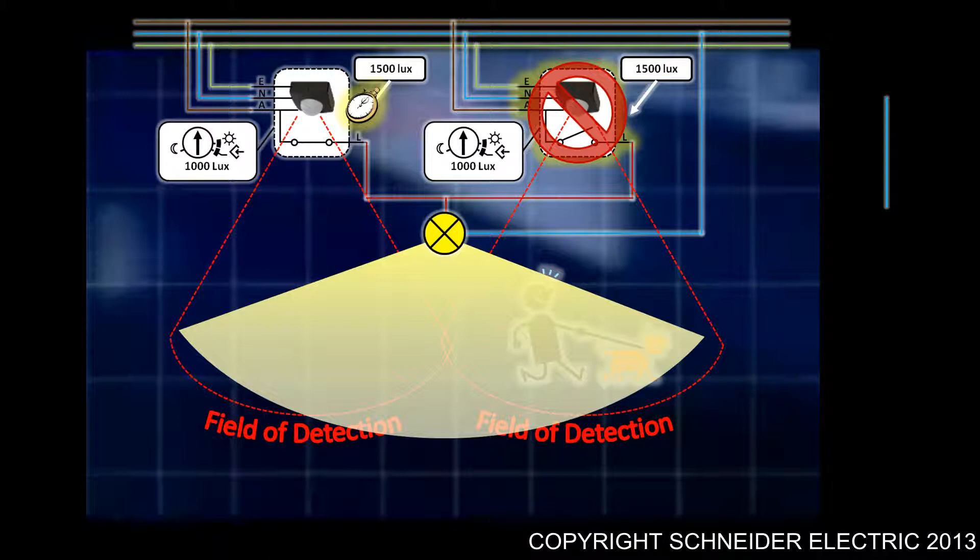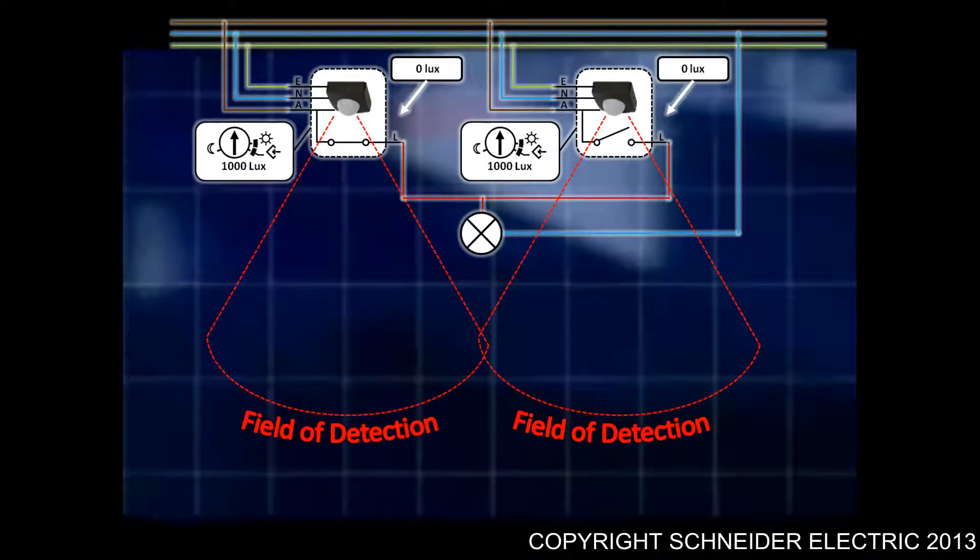That second sensor will start to operate as per normal when all the light has turned off and that sensor is measuring anything less than 1000 lux. Now if you want that sort of functionality, what you're looking for is an automation system, and one such automation system is the Clipsal CBUS system.